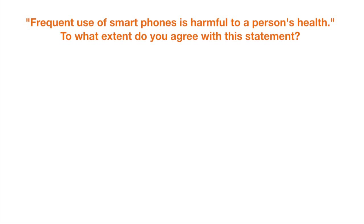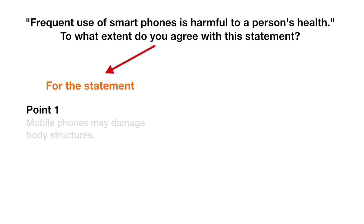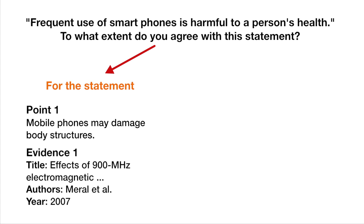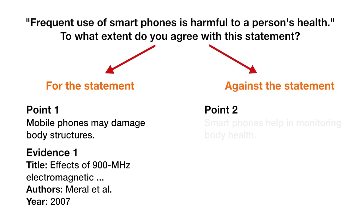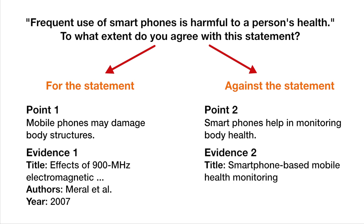Mark down where you found the information, and use the table you have created from your sources to group similar points as well as directly opposing points. This can form the basis of your paragraphs and gives you a clear picture of what you're going to write and how many points you're going to discuss. You can also arrange these groups into a logical order so that your essay will flow better.